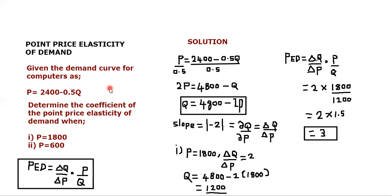Given the demand curve for computers as P = 2400 − 0.5Q, determine the coefficient of the point price elasticity of demand when the price is 1800 and when the price is 600. The main formula for price elasticity of demand is the change in quantity demanded over the change in price, multiplied by price over quantity demanded — where P is price and Q is quantity demanded.